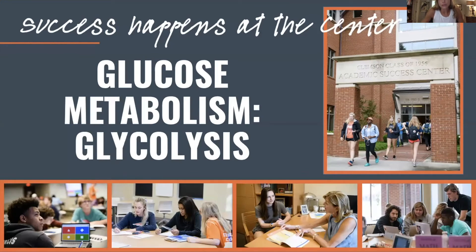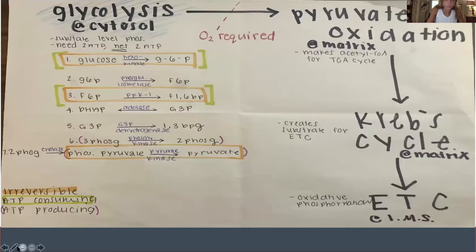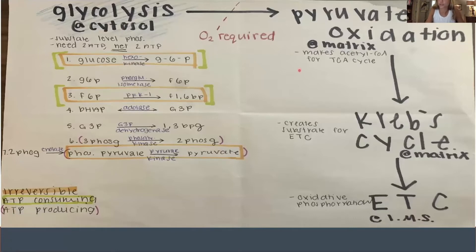Today, I'm going to go over glucose metabolism, but specifically glycolysis. We have the general flow of glucose metabolism in its totality: glycolysis to pyruvate oxidation, the Krebs cycle, to the electron transport chain.